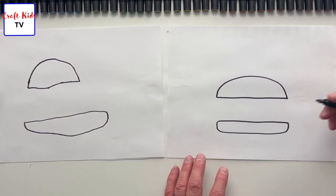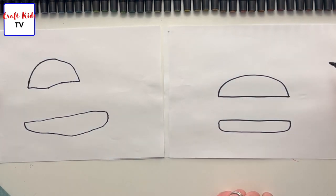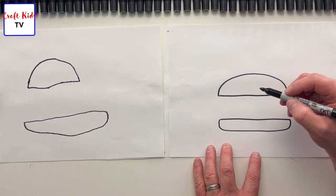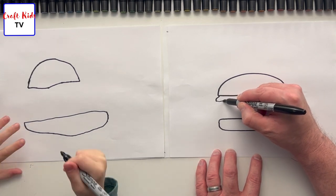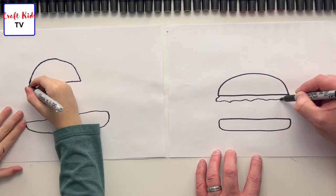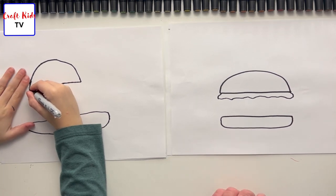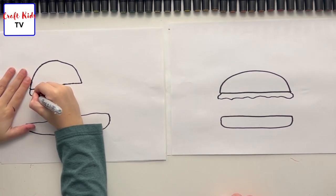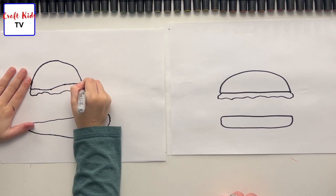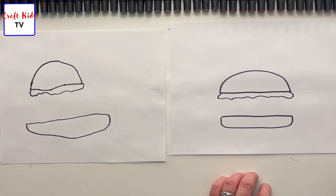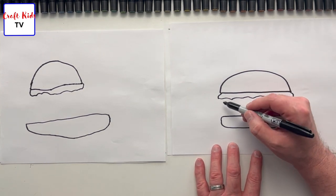Now we're going to draw some lettuce on top. The lettuce is going to look like this - make sure it's wavy, a little bit. Good job! Next we're going to draw the cheese.